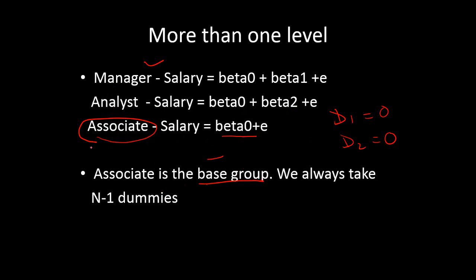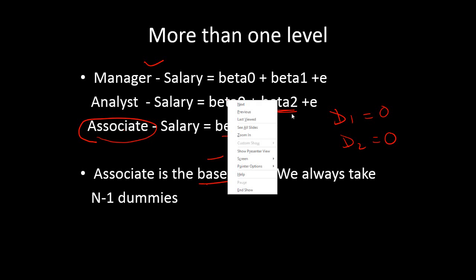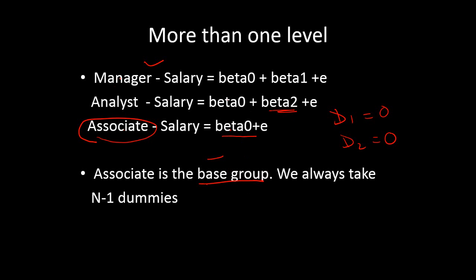The difference between associate salary and analyst salary is β₂, since β₀ appears in both equations and the only additional term for analyst is β₂. Similarly, the difference between manager salary and associate salary is β₁, since β₀ cancels out and the only difference is β₁.